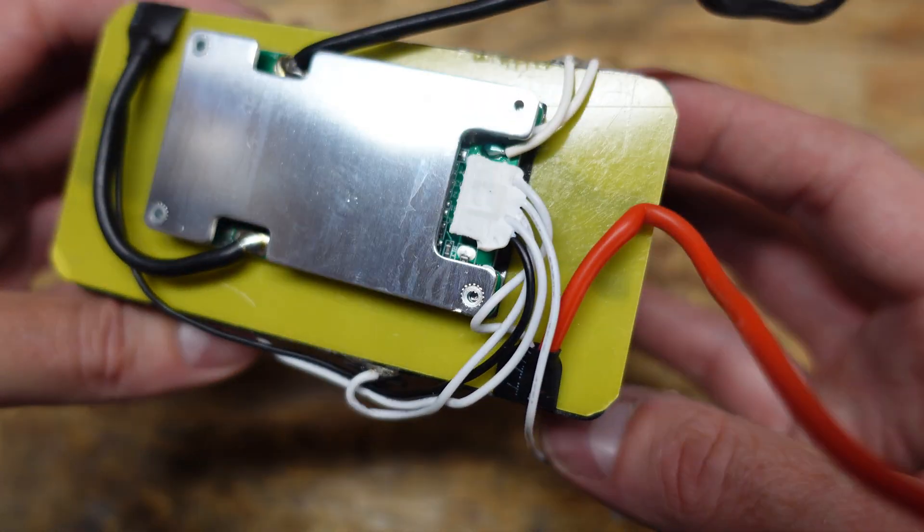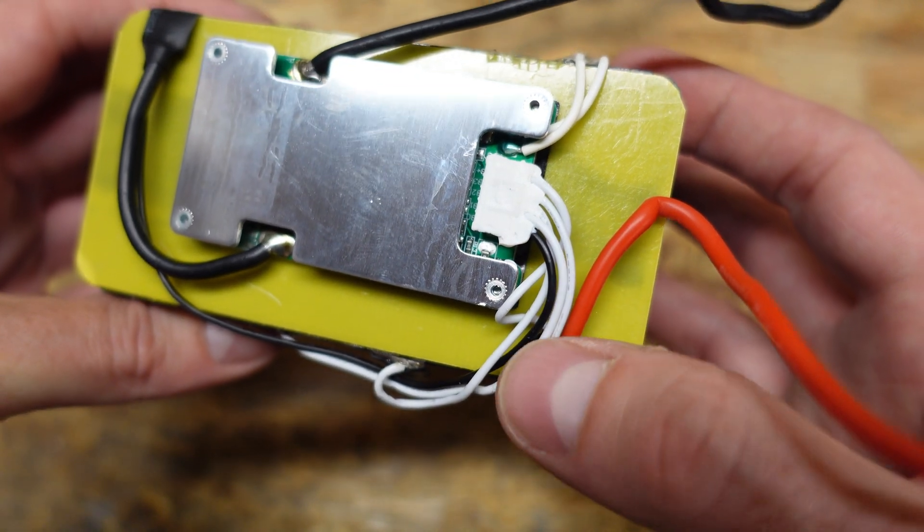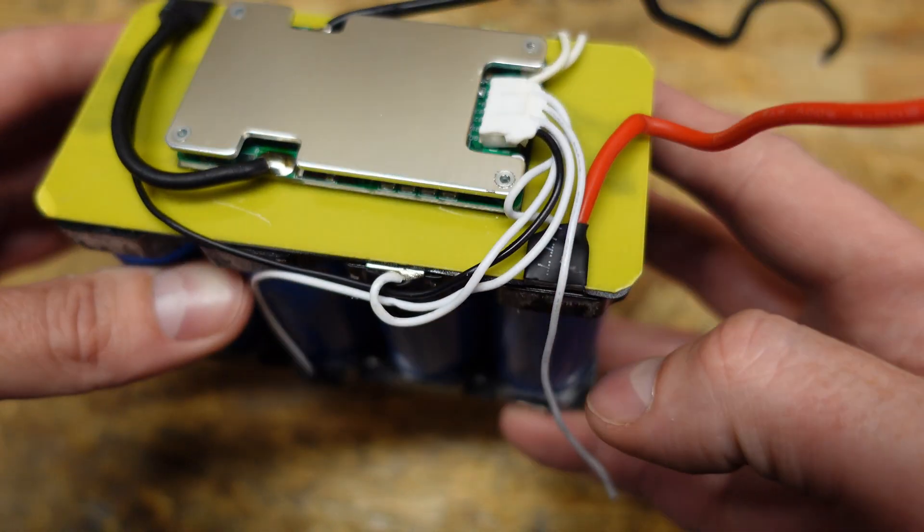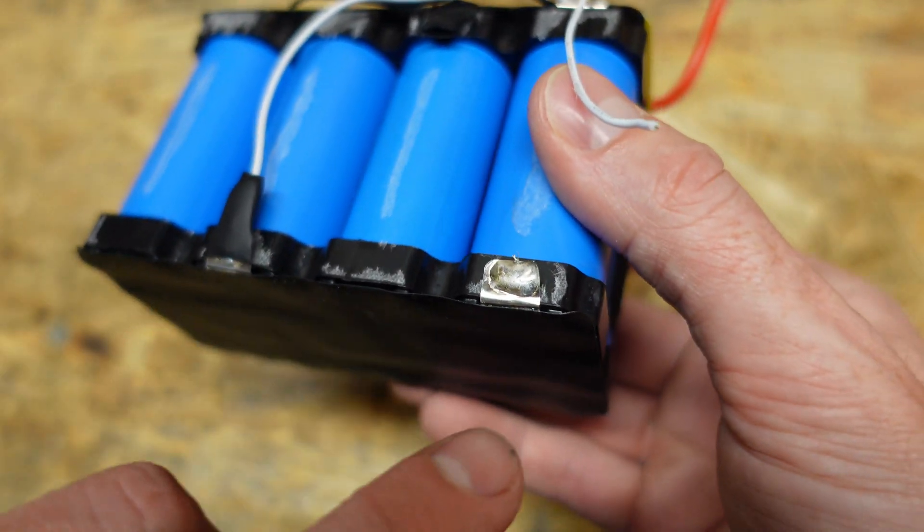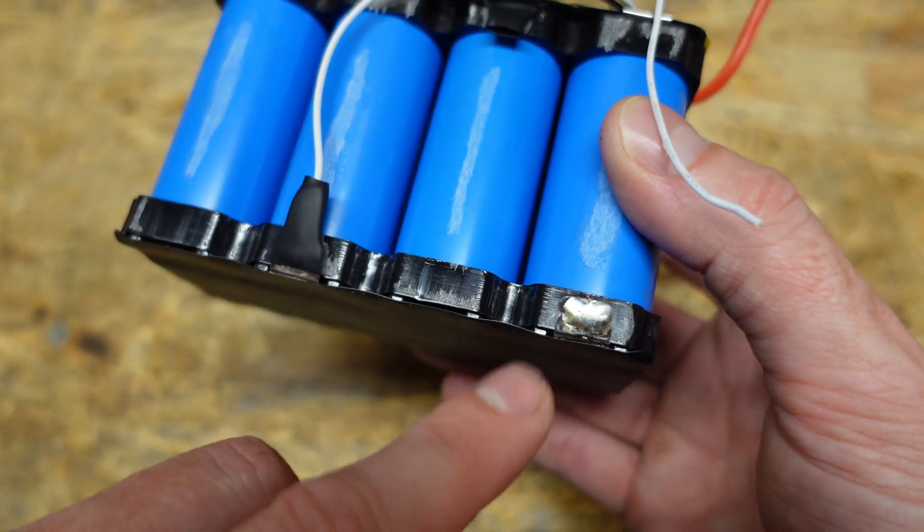All right here we can see a little bit more of the BMS wiring. These white leads and this black lead are going to be the balance leads. They are coming down to some nickel strip and they're soldered into place as we would expect here.